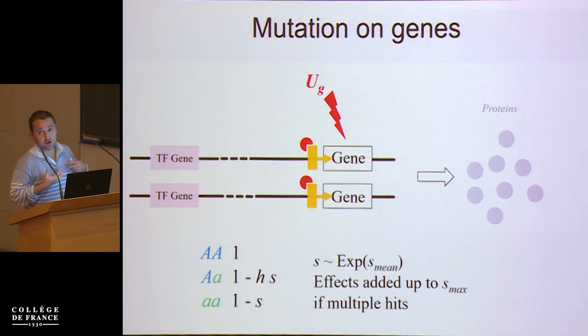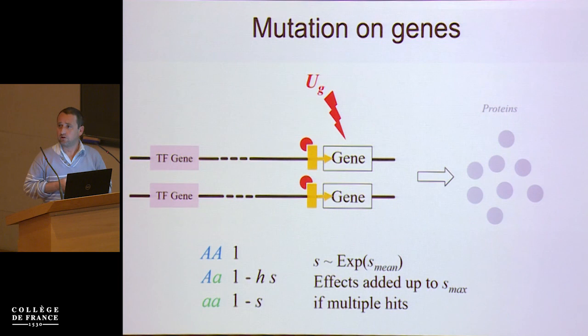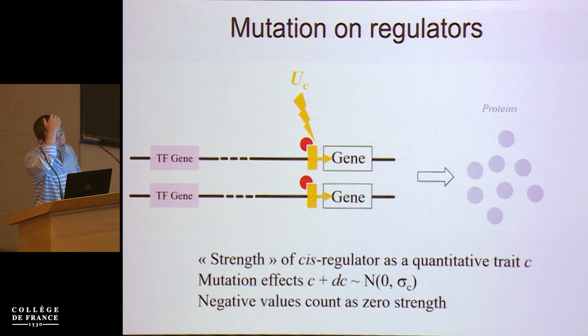You consider that deleterious mutations on the gene occur at some rate, and that you've got various deleterious mutations sampled from a distribution. The idea is that you can accumulate them up to a point S_max, which is the maximum fitness effect when this gene is completely degenerate — which is not necessarily lethal. So if you got multiple hits, you may end up with an effect of S_max, but it won't be larger than this.